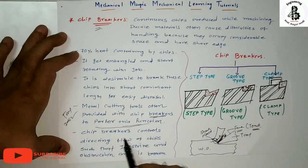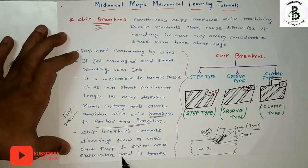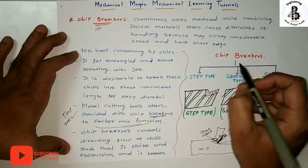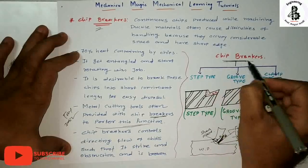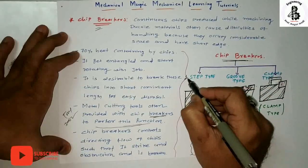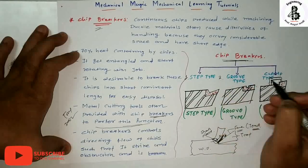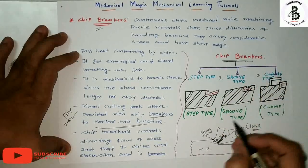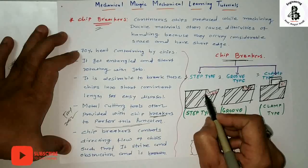Chip breakers control and direct the flow of chips such that the chip strikes an obstruction and breaks. There are three types of chip breakers: the first one is the step type, the second one is the groove type, and the third one is the clamp type.